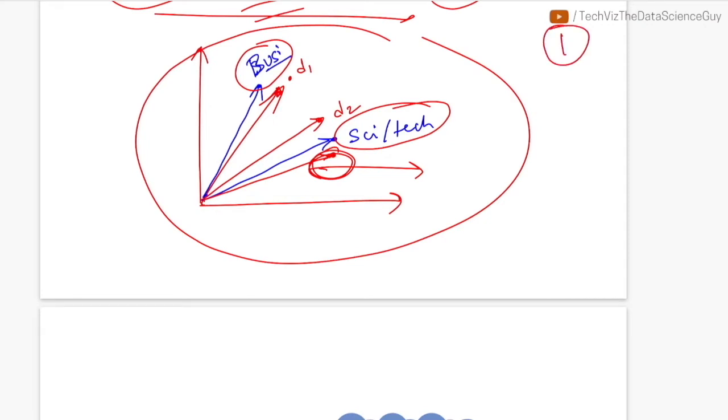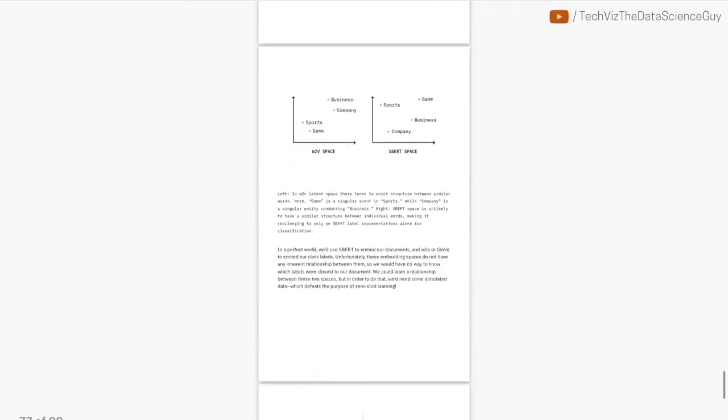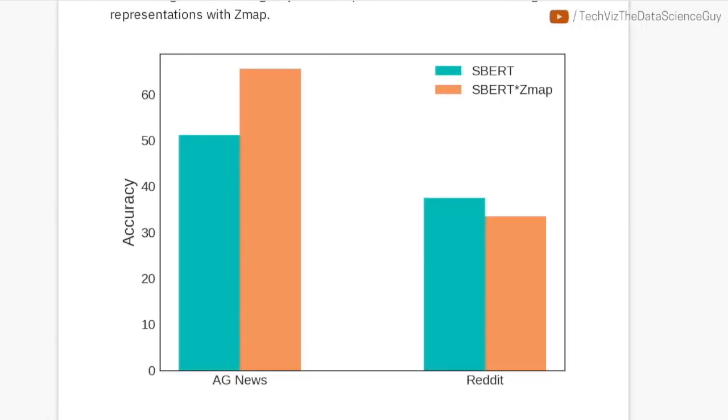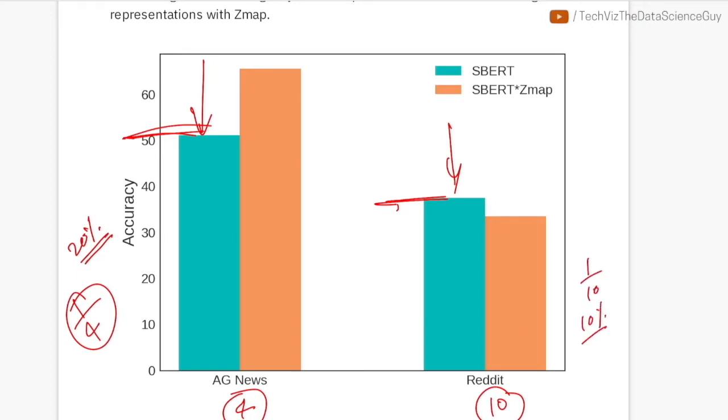This is the first approach they propose. If you see the results, this green color bar is the results of the classification where AG News had four classes and Reddit had ten classes to classify each document into. We're getting close to 50% for news and close to 40% for Reddit. That's not a very bad accuracy because if you see, one by four, if you select anything at random, we're getting roughly close to 25% performance. With this technique and having no data at all, we are reaching close to 50% and that's really cool.